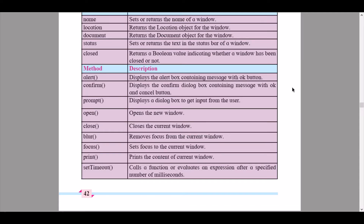The 'print' method prints the content of the current window. The 'setTimeout' method calls a function or evaluates an expression after a specified number of milliseconds. These were the properties and methods to be used in the window object, and we will scroll down to the programs and outputs given to us.